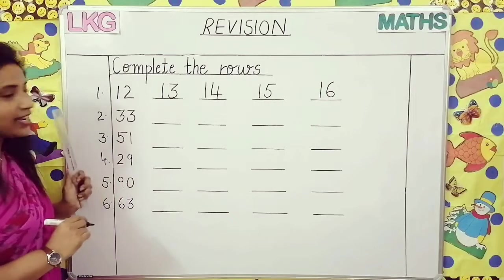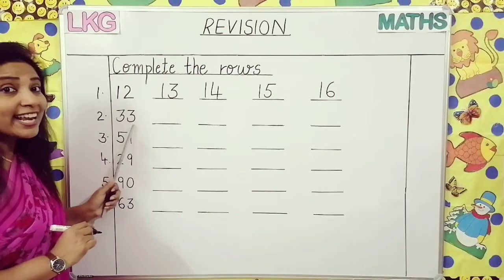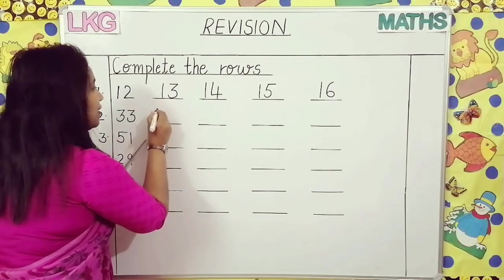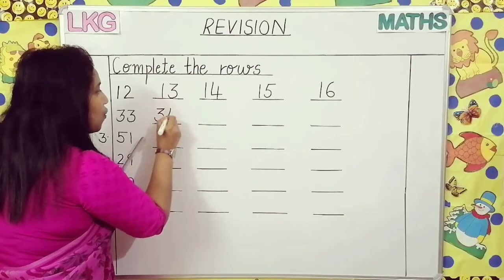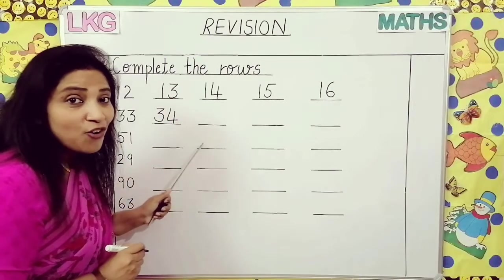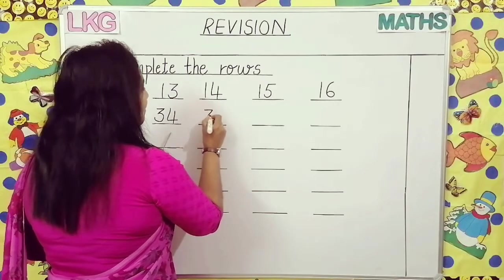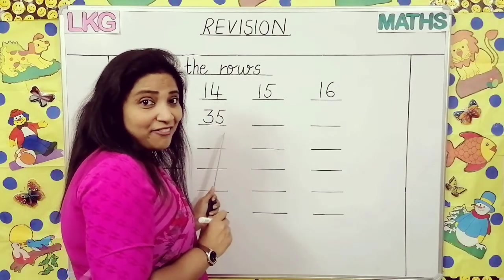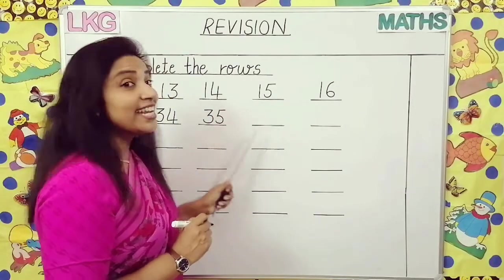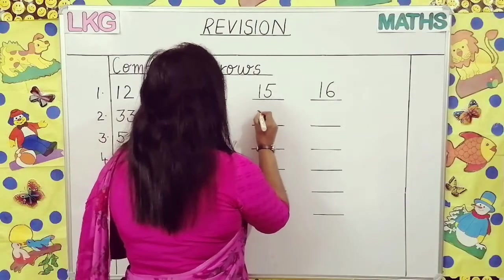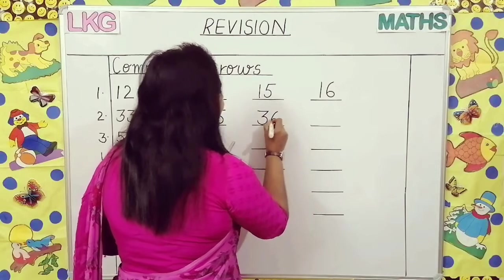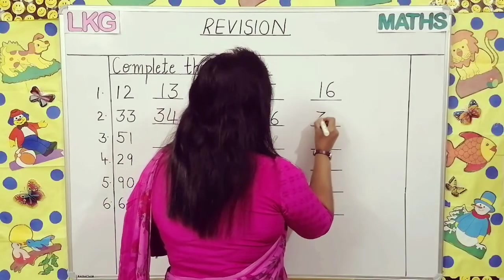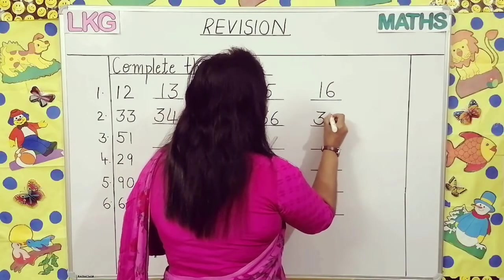Now come to the second number. Which number is this? Thirty-three. What comes after thirty-three? Thirty-four. After thirty-four? Thirty-five. After thirty-five? Thirty-six. What comes after thirty-six? Thirty-seven.